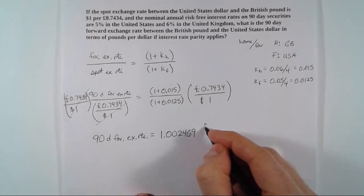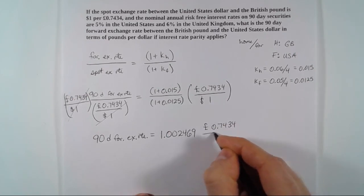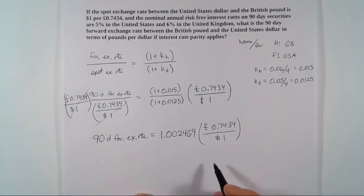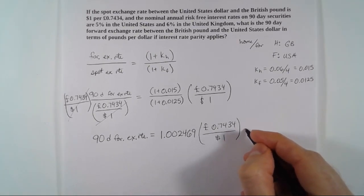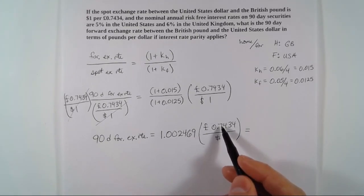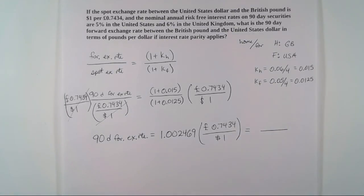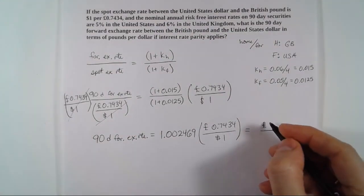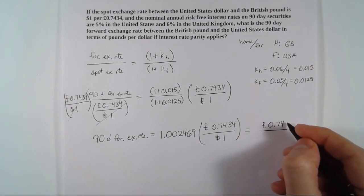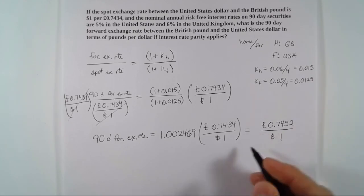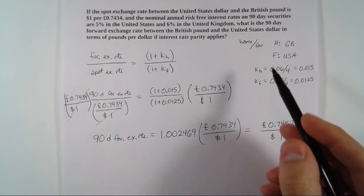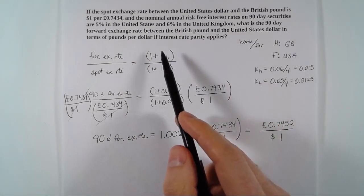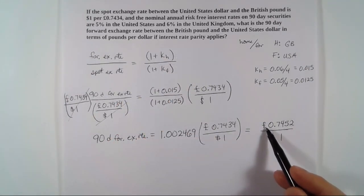Bringing this piece down, we have 0.7434 over a dollar, meaning our 90-day forward exchange rate equals 1.002469 times 0.7434 British Pounds per dollar. Pause the video and multiply through the numerators. You should get 0.7452 British Pounds per dollar. We retained the units throughout, so the 90-day forward exchange rate between the British Pound and the Dollar in terms of pounds per dollar is 0.7452 British Pounds per dollar.